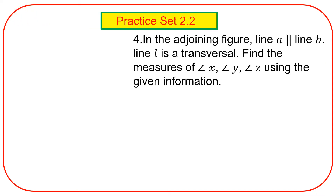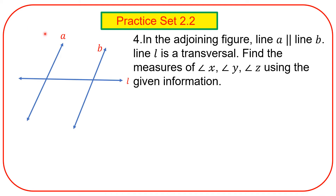Fourth example. In the adjoined figure, line A is parallel to line B, and line L is the transversal. Find the measures of angle X, Y, and Z. This is X, Y, Z. Using the given information.